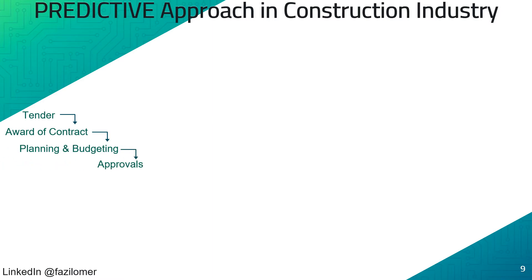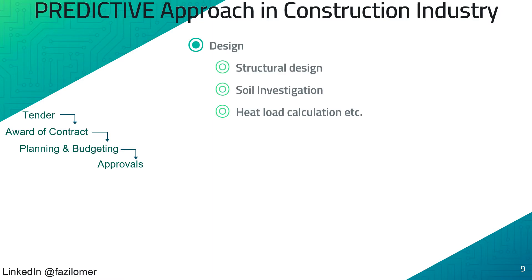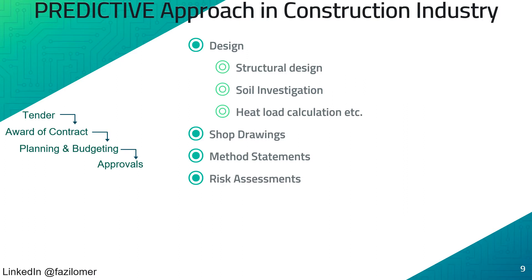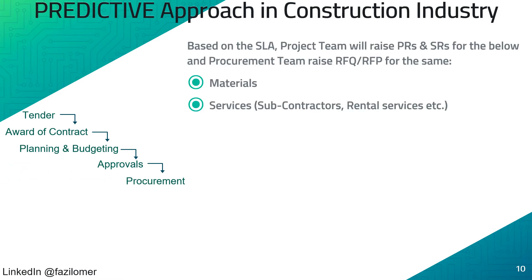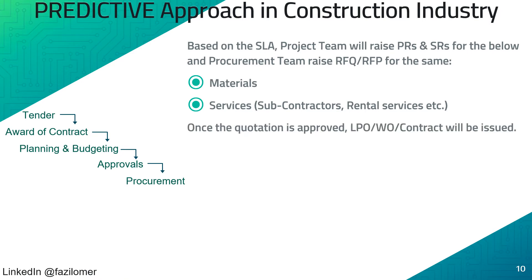Any approvals from the client or local authorities shall be obtained before starting any construction activities. Approvals are required for documents such as structural design, soil investigation reports, heat load calculations, shop drawings, method statements, risk assessments, and no objection certificates from local authorities such as civil defense and municipality. Based on the service line agreement between various stakeholders, the project team will raise purchase and service requisitions for materials and services. The procurement team will then raise a request for quotation or proposal to external suppliers or subcontractors. Once the quotation is approved, a purchase or work order or contract will be issued.